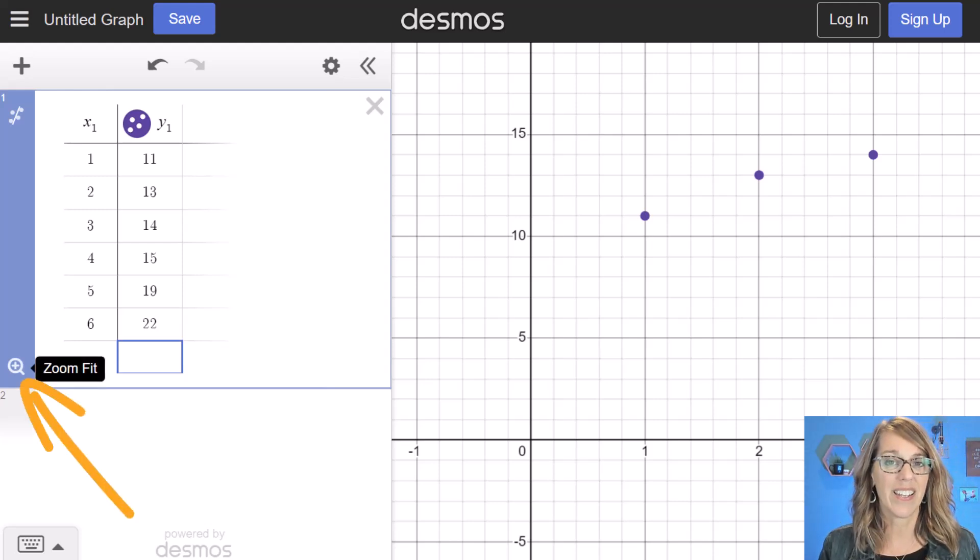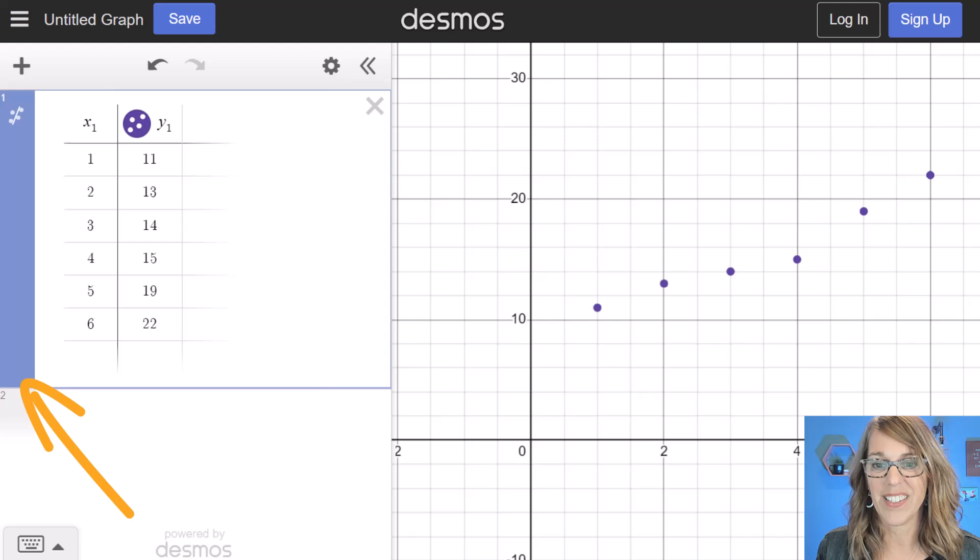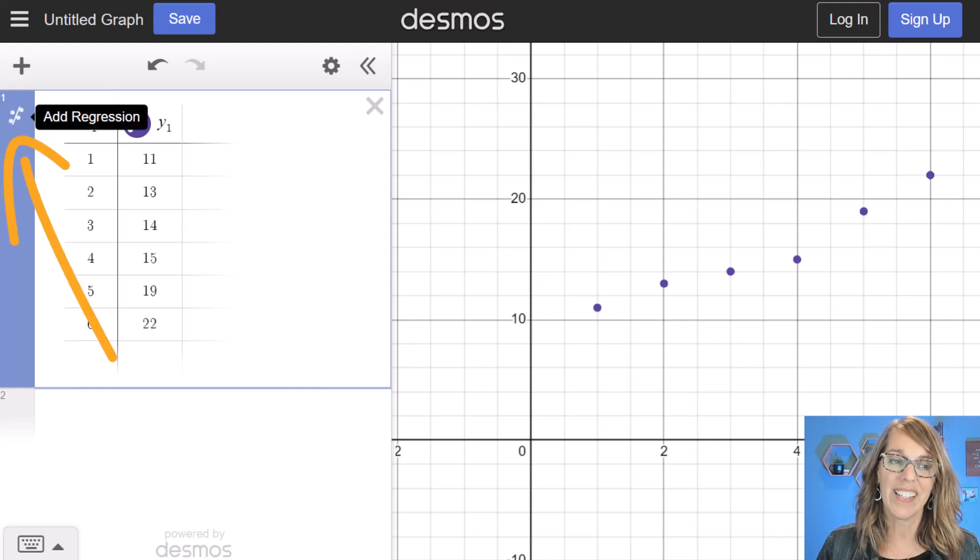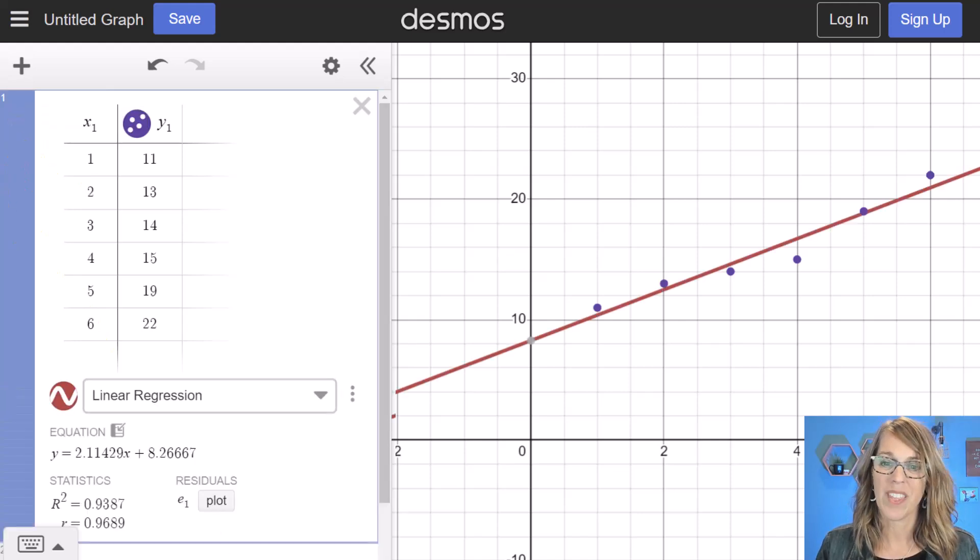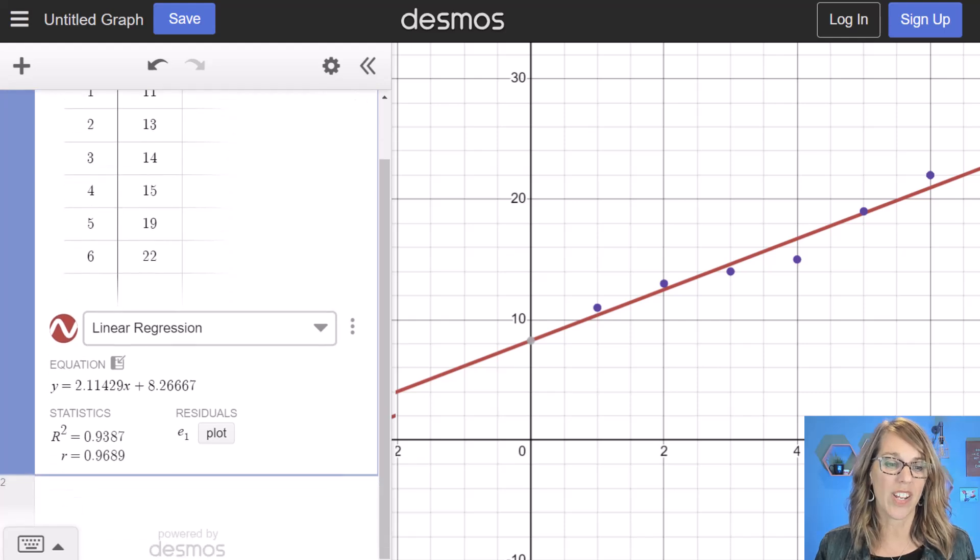I'm going to again click on zoom fit. And I can see that it's kind of sort of linear. I just made up some values. I'm going to click on that regression symbol. And as it runs that linear regression, it's actually a pretty good fit for this linear regression with that correlation coefficient at 0.9689.